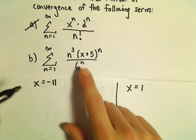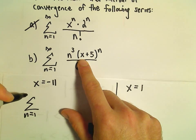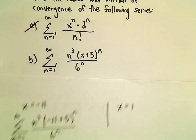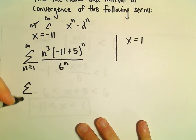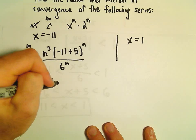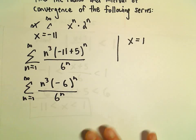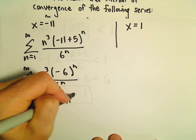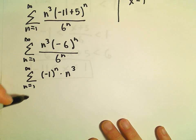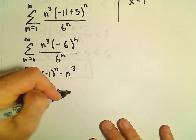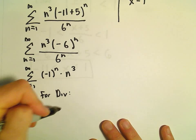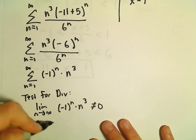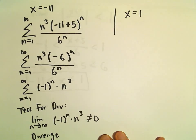Let's plug negative 11 into our series. We have n equals 1 to infinity: n cubed times negative 11 plus 5 raised to the n, over 6 to the n. That gives us n cubed times negative 6 to the n over 6 to the n, which simplifies to negative 1 to the n times n cubed. We can just use the test for divergence: the limit as n goes to infinity of negative 1 to the n times n cubed is definitely not going to equal 0, so this series diverges. When x equals negative 11, it diverges.